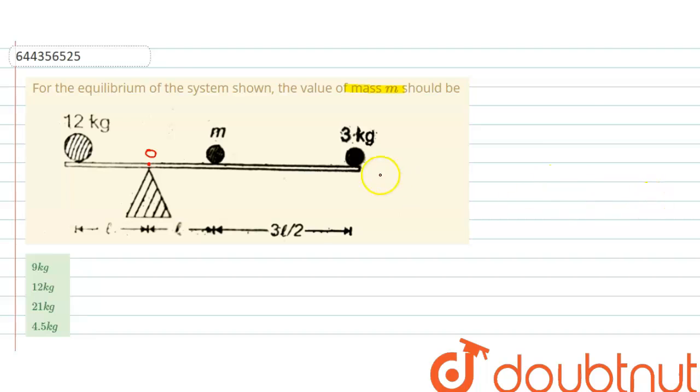Let's see - the weight of 3 kg is in the downward direction, which is equal to 3g. The weight of mass M is in the downward direction, Mg. And the weight due to the 12 kg is 12g.